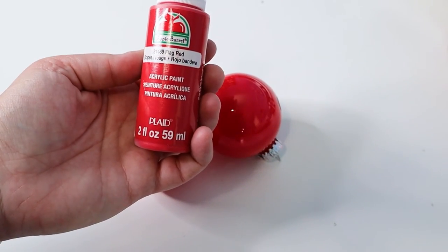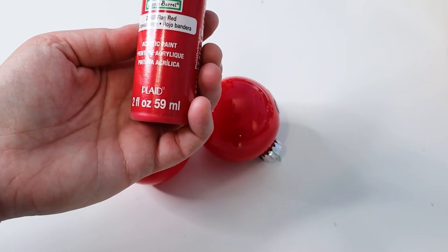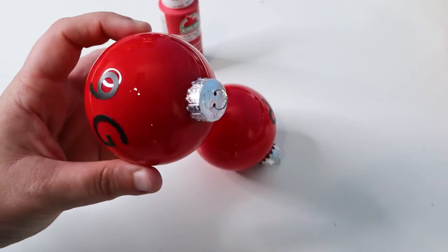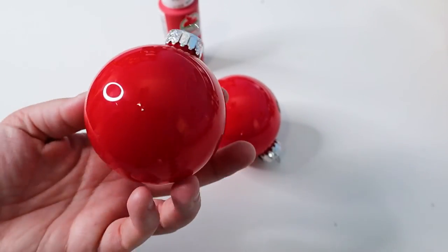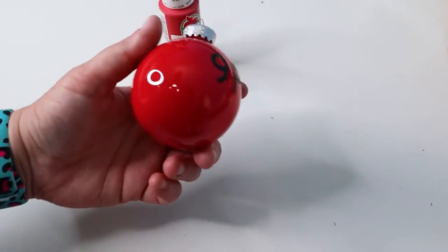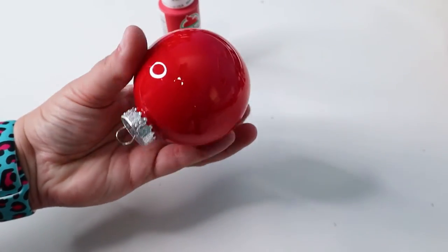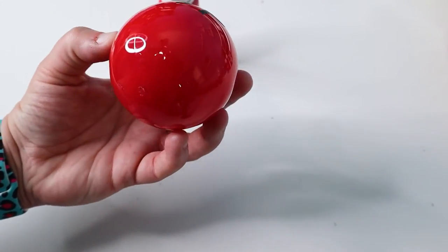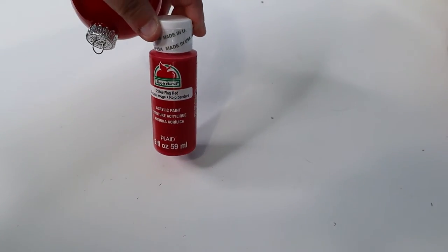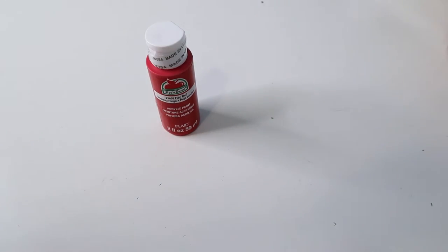Nine is Apple Barrel in flag red acrylic paint. And this one looks like it held up okay. The glass one is really well covered. I don't see any streaks. I don't see any cracks. And then let's take a look at plastic. Plastic looks just as good. No streaks, no cracks. Looks fantastic. I would say that number nine here, the Apple Barrel flag red acrylic paint worked really, really well.